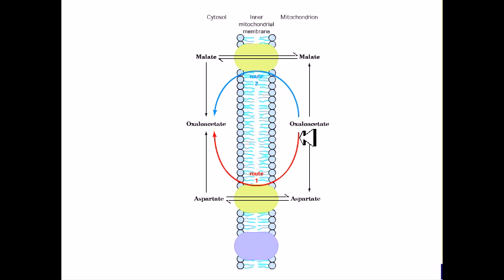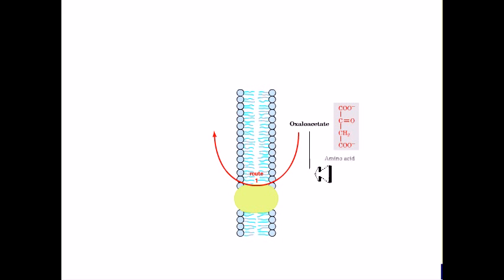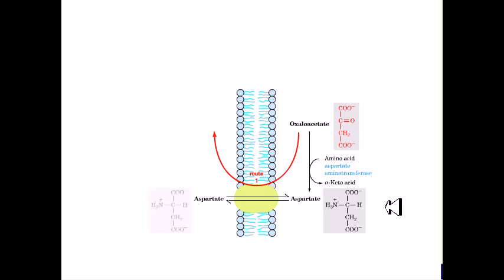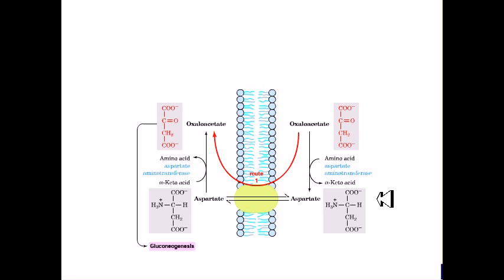In route 1, oxaloacetate is converted to aspartate by aspartate aminotransferase in the mitochondrion. Aspartate is transported into the cytosol and converted back to oxaloacetate, where it enters the gluconeogenesis pathway.